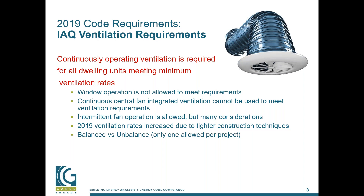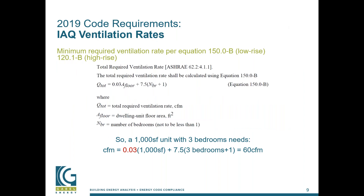We're also going to have a slightly higher ventilation rate due to tighter construction techniques. The two big items to look at are the pathways: there's a balanced pathway and an unbalanced pathway to meeting this code requirement. The ventilation rates have shifted a little — .03 times square footage, plus 7.5 times the number of bedrooms plus one. That should look and feel very similar. The only thing that changes is what's shown in red for this next code cycle. For high-rise multi-family, this is now aligning, so it should be the same across the multi-family board.